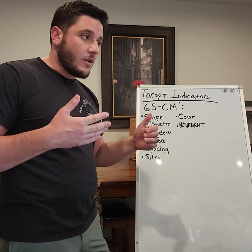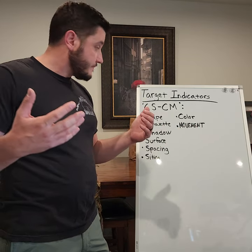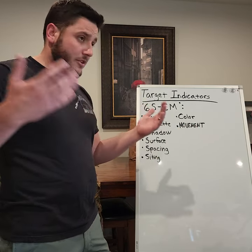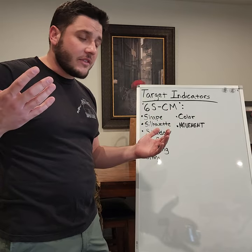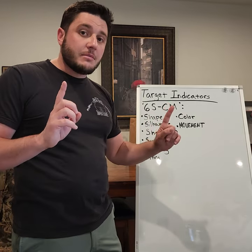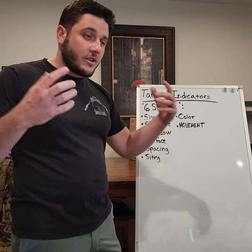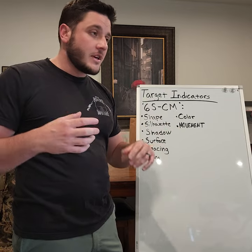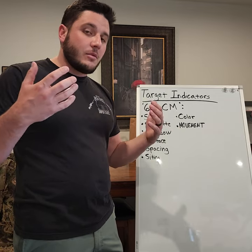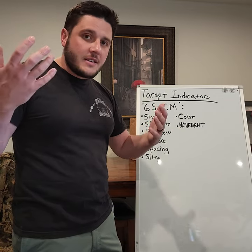Humans are natural predators, whether some people like to believe it or not, meaning we are programmed to see movement — particularly lateral movement, side to side. We're hunters, we're predators. That's the thing that will tip us off the quickest.